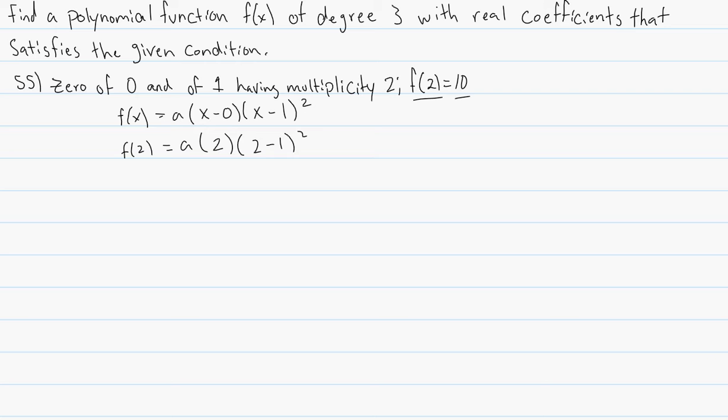f of 2 is equal to 10 so we're going to put 10 in its place and that is equal to 2a times 2 minus 1 squared is simply just 1. So we have that 10 is equal to 2a, divide both sides by 2 and we get that a is equal to 5.